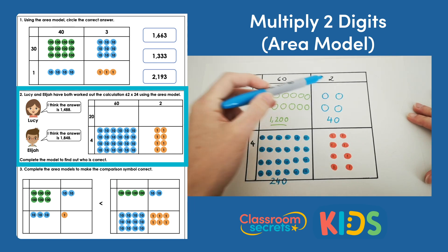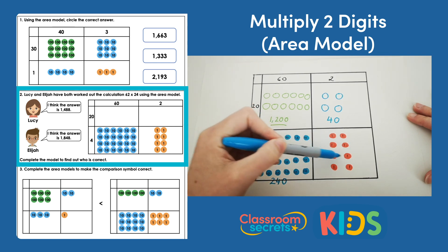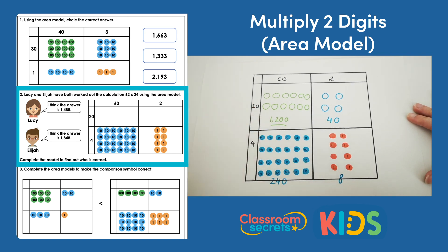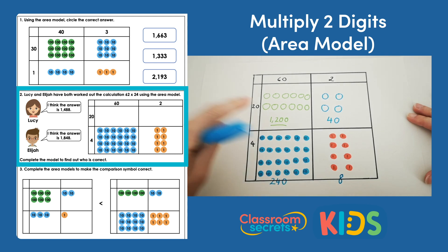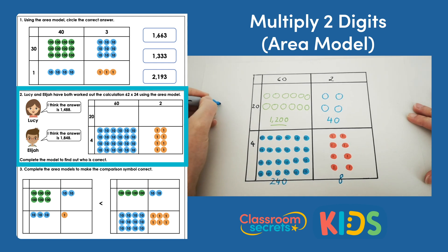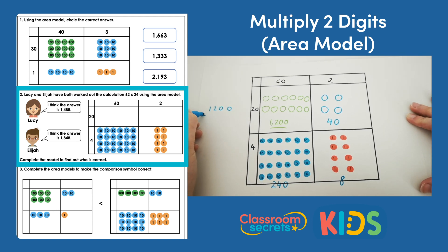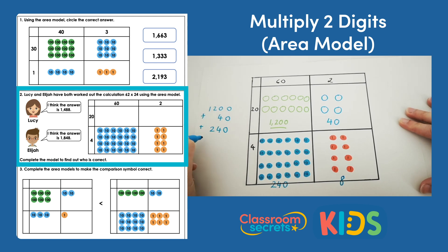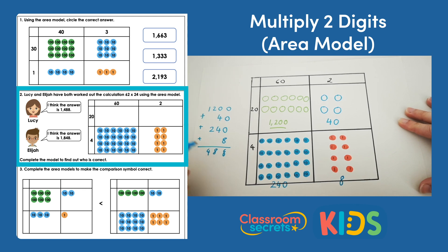Finally we do 2 times 4, which is 8 — 2, 4, 6, 8. Now we can add these four numbers together: 8, then 4 and 4 gives us 8, then 2 and 2 gives us 4, and 1 on its own is 1 — giving us 1,488. So Lucy is correct.